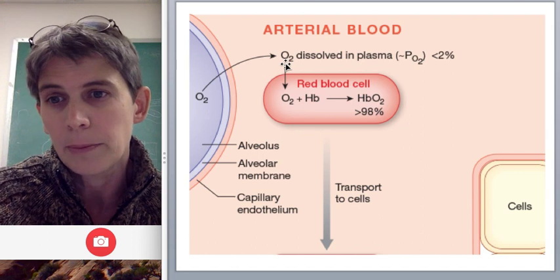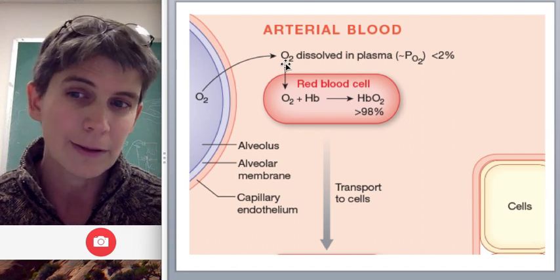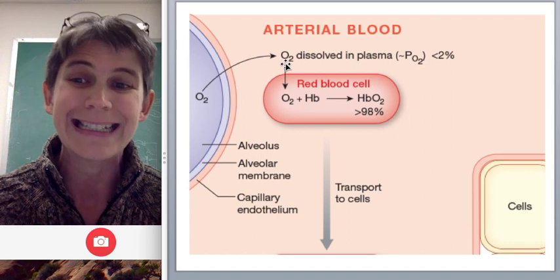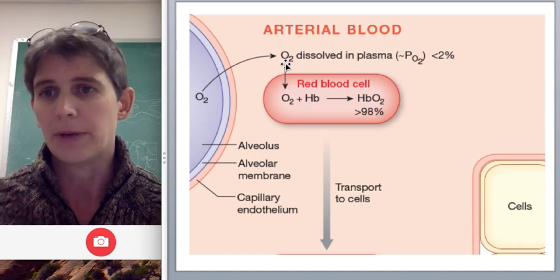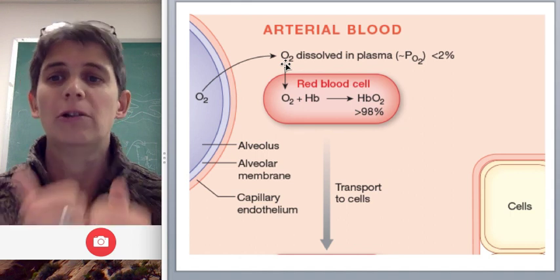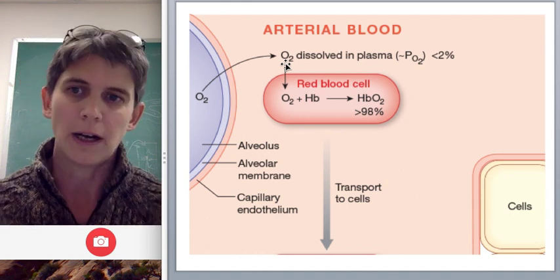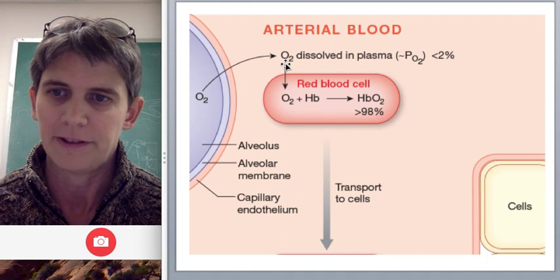Having hemoglobin in our blood allows the blood to contain between 80 and 90 times as much oxygen as it would without hemoglobin. So hemoglobin is absolutely essential to getting enough oxygen into the blood for us to stay alive.